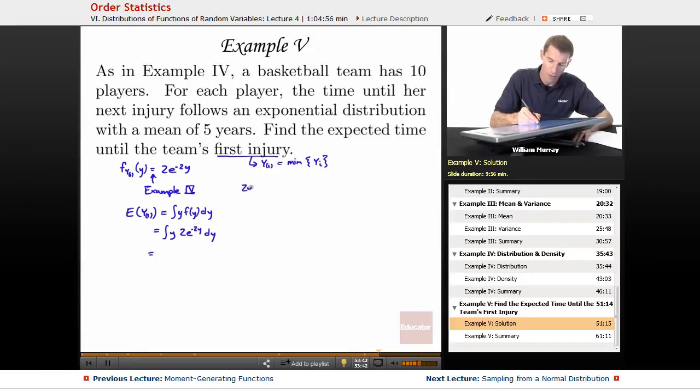Let me go ahead and integrate by parts. I'm going to use tabular integration. So e to the negative 2y, take derivatives on the left: 2y, the derivative of that is 2, derivative of a constant is 0. And the integral of e to the negative 2y is negative 1 half e to the negative 2y.